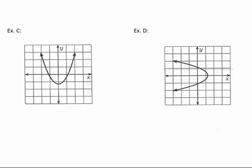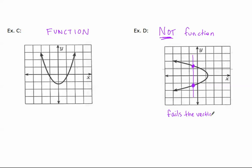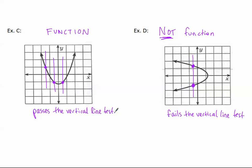Let's look at a couple of examples that are not ordered pairs. Example C is an example of a function. Example D is not a function, because I can find a place where I can draw a vertical line and it hits two points on the graph — the x is repeating, so this one fails the vertical line test. Over here in example C, anywhere I draw a vertical line it only crosses one point, so it passes the vertical line test. That's a quick way to tell that we have a function.